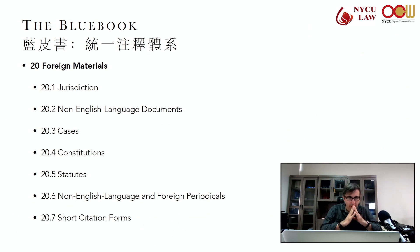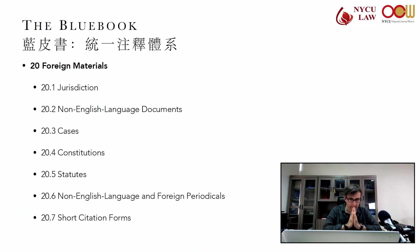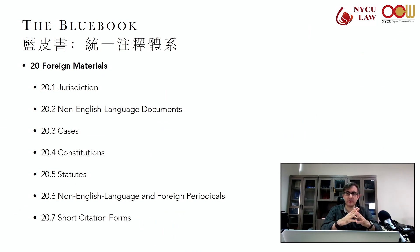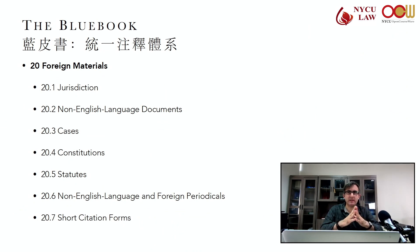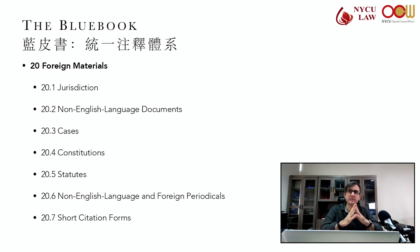Rule 20.1. Whenever you're citing a non-U.S. source, regardless of the language, you'll always want to indicate the jurisdiction that you're talking about in a parenthetical at the end. There are abbreviations in Table 10 that you'll need to use. For example, the first example they have here is a case — at the end, be sure to just put the jurisdiction in parentheses.